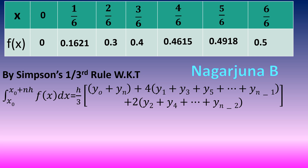Now, the values of y naught, y1, y2, y3, etc. are obtained from the table. So, y naught is 0, y1 is 0.1621, y2 is 0.3, y3 is 0.4, y4 is 0.4615, y5 is 0.4918, and y6 is 0.5. That means y6 is the last term, that is yn; y5 is yn minus 1; and y4 is yn minus 2. Using these values, we substitute into the formula to evaluate the given integral.